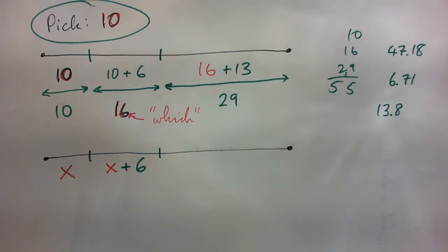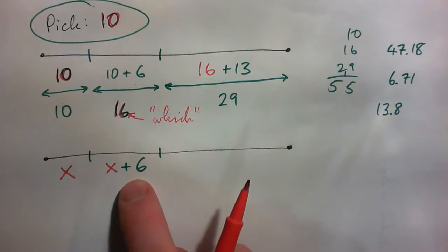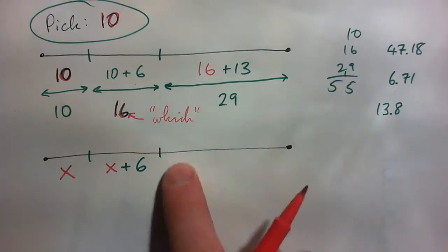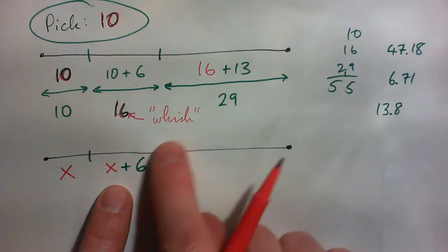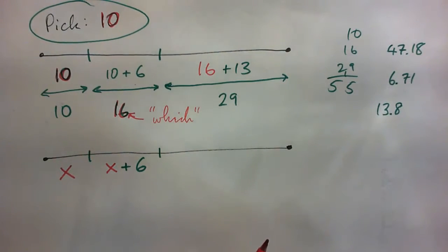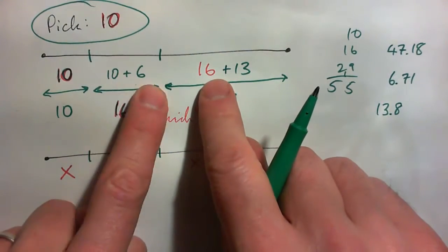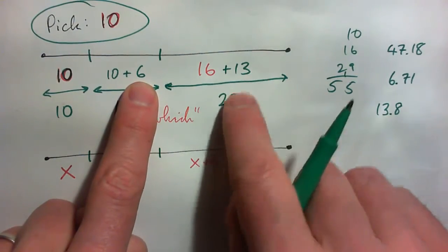X plus 6. Contact me for help with this if you need it. And this in turn is, because it says which is 13 meters shorter than the next, so this piece is 13 longer than this one. So this one is, you take your X plus 6, and then you add 13. Just like we did here, we got 10 plus 6, and then plus 13 to get 29.